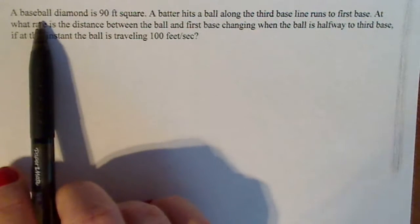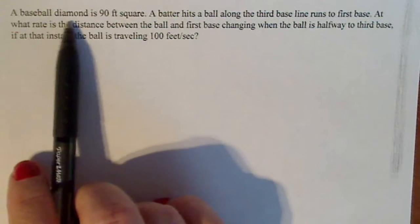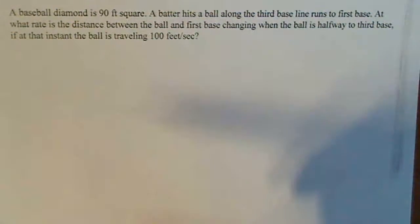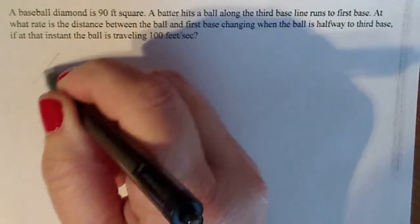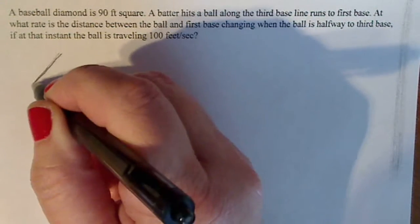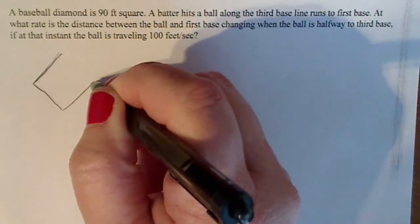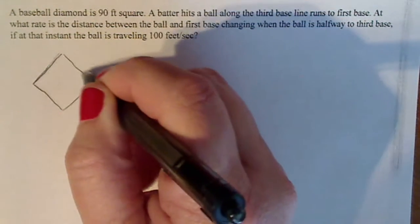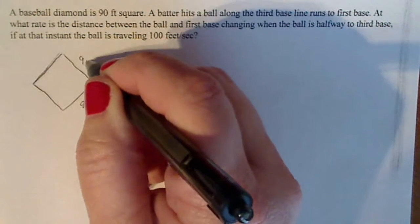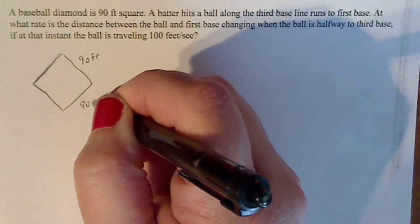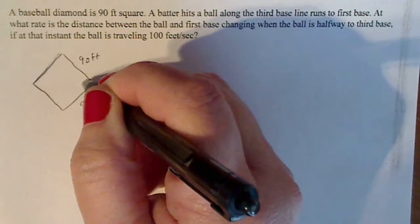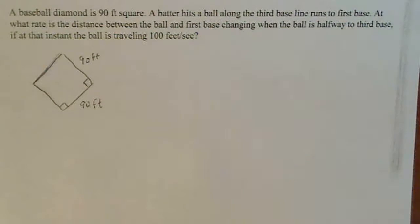In this case, we have a baseball diamond and that's a 90-foot square. That means on each side of the diamond it has a length of 90 feet — 90 feet all the way around. And since it's a square, each of these corners is a right angle.